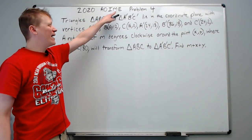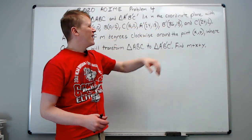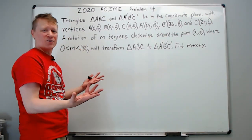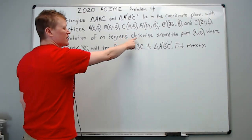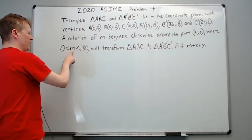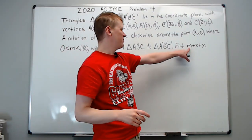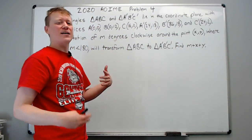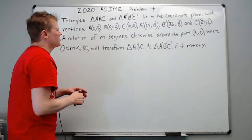Moving on to the 2020 AIME problem number four. Triangles ABC and A'B'C' lie in the coordinate plane with six listed vertices. You're not really going to process what those vertices are doing without graphing them, so just skip reading them for now. A rotation of m degrees clockwise — most rotations in problems are counterclockwise — around the point (x, y) will transform one triangle to the other. Find the sum of the angle of rotation plus the coordinates of the ordered pair.